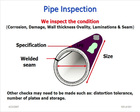Other checks may need to be made such as distortion, tolerance, number of plates, and storage. At site you must check the ovality and the must diameter of the pipe.